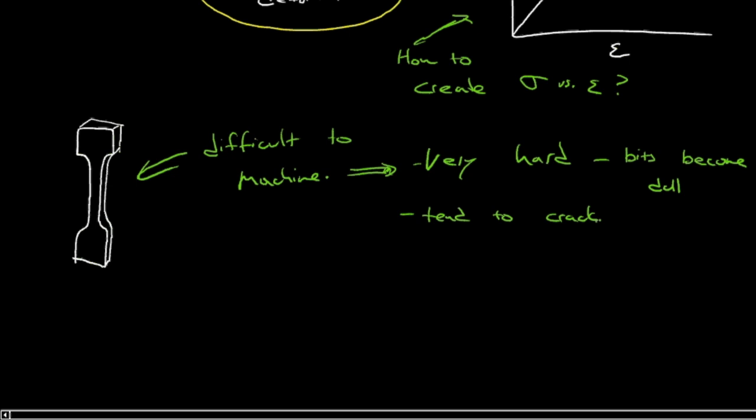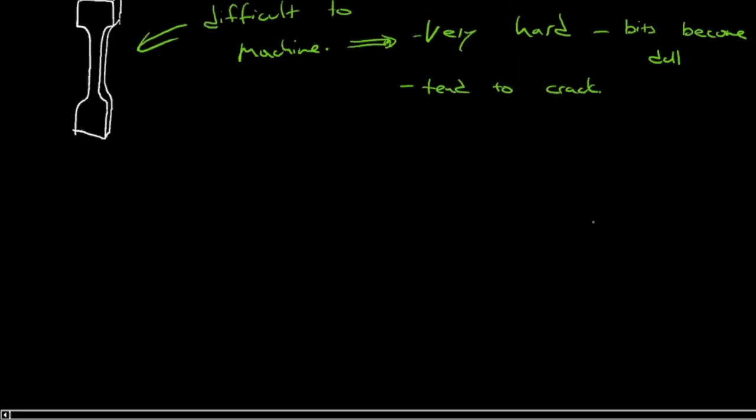So you're really after some kind of simple geometry to test a ceramic. There's different ways you can do this, but one fairly simple geometry that's easy to test is a rectangular cross-section beam, like this.